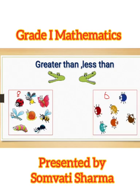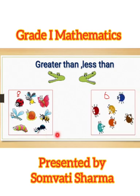Here you can see these are 8 insects and these are 6. So alligator will eat more, means 8. So we will put this symbol, 8 is greater than 6.